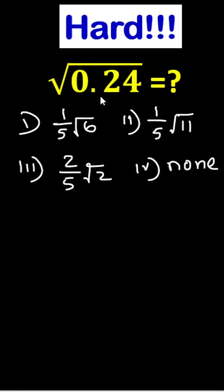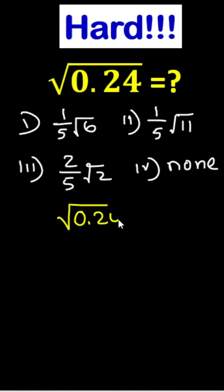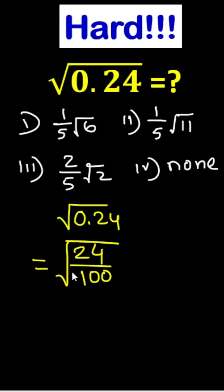Here is the problem: root 0.24, and here are some options — which one is correct? We can write root 0.24 as 24 divided by 100, so it becomes root of 24 over 100.